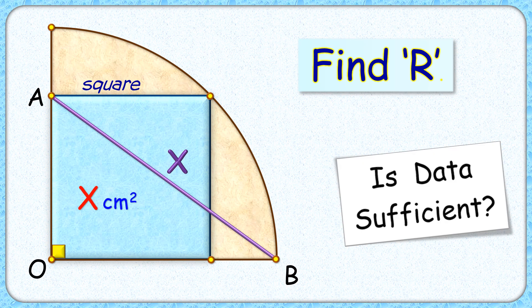Welcome everyone. This interesting question given to us is a square inside a quadrant. The area of the square is x centimeter square and the length of this line segment AB from the vertex of square to the vertex of quadrant is x centimeter.